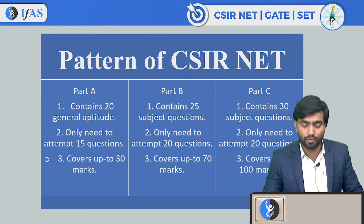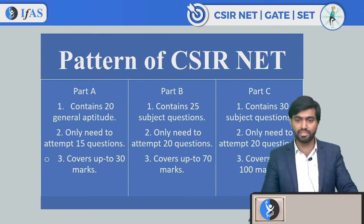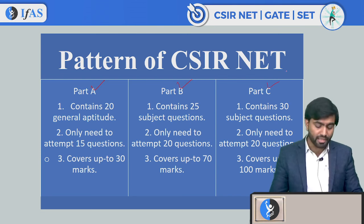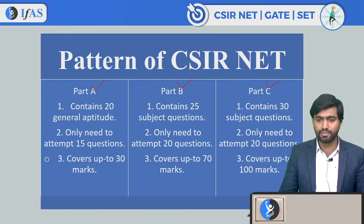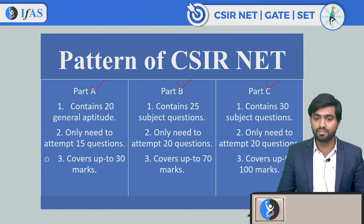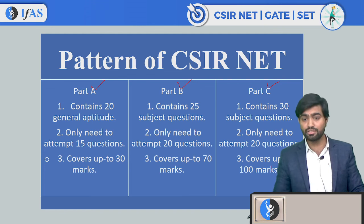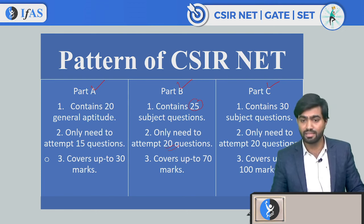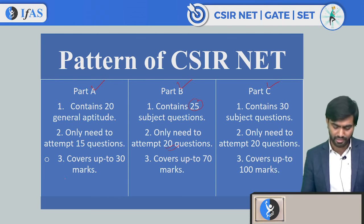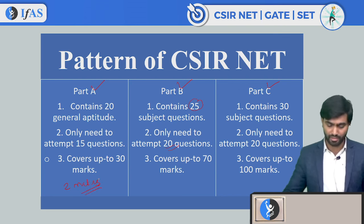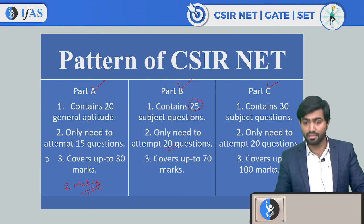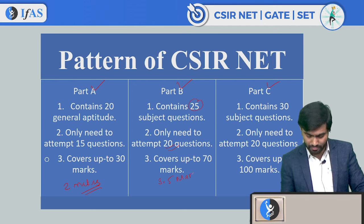The previous pattern of CSIR NET is very simple — there are three parts: Part A, Part B, and Part C. In Part A we generally have 20 aptitude questions and we only need to attempt 15, covering 30 marks out of 200. Part B contains subject questions — 25 questions are there but only 20 need to be attempted, covering 70 marks, and each question is of 3.5 marks. In Part A, each question is of 2 marks.